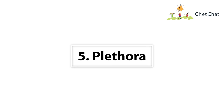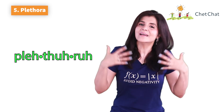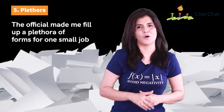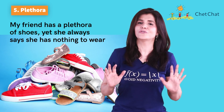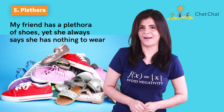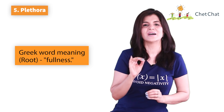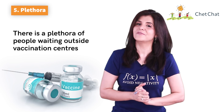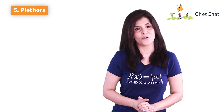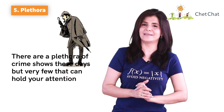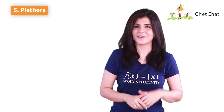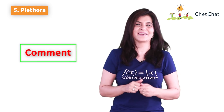Word number five is 'plethora.' Plethora means a large or excess amount of something. Example: 'The official made me fill up a plethora of forms for one small job,' or 'My friend has a plethora of shoes yet she always says she has nothing to wear.' Plethora comes from a similar Greek word meaning fullness. Example: 'There is a plethora of people waiting outside vaccination centers,' or 'There are a plethora of crime shows these days, but very few that can hold your attention.' Tell me — what do you have a plethora of?